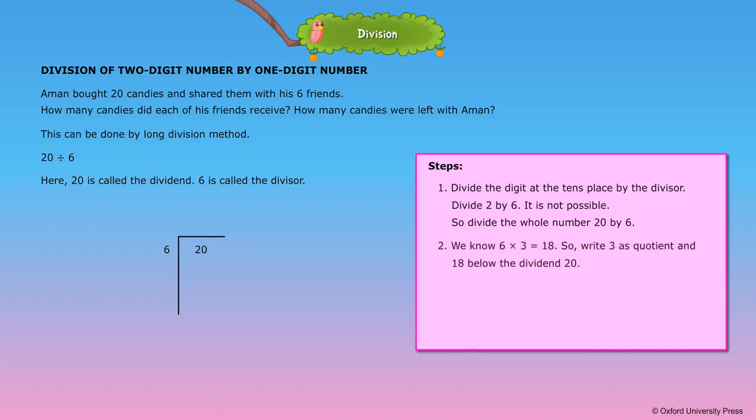2. We know 6 into 3 is equal to 18. So write 3 as quotient and 18 below the dividend 20.